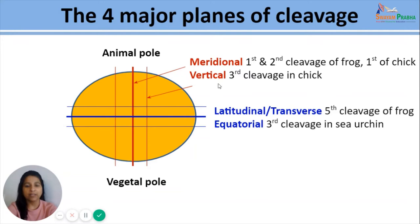The horizontal plane passing through the center of the egg, just like the equator, is known as the equatorial plane of cleavage, as seen in the third cleavage of sea urchin. Any other horizontal plane not passing through the center but slightly above or below the equatorial line is known as the latitudinal or transverse plane of cleavage, as seen in the fifth cleavage of frog.